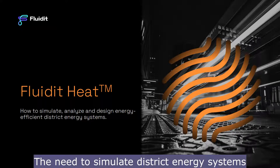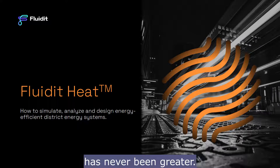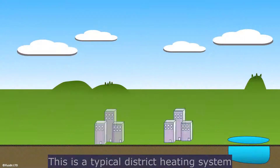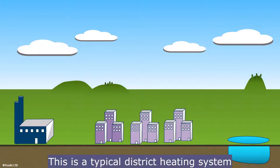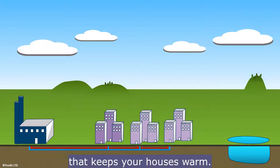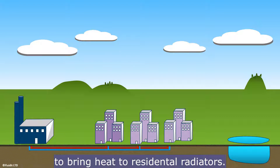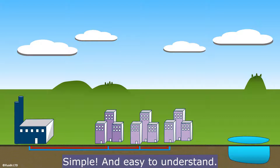The need to simulate district energy systems has never been greater. This is a typical district heating system that keeps your houses warm — it burns fossil or biological fuels to bring heat to residential radiators. Simple and easy to understand, or is it?